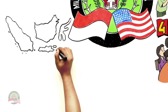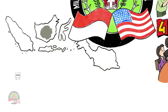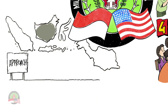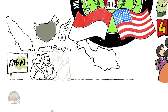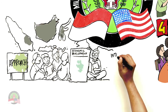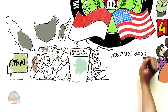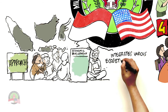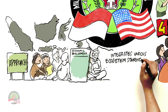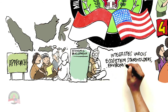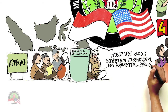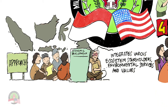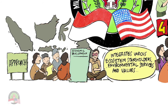In carrying out these activities, Green Prosperity Projects uses a landscape approach for economic development which integrates various ecosystem stakeholders, environmental services, and values.